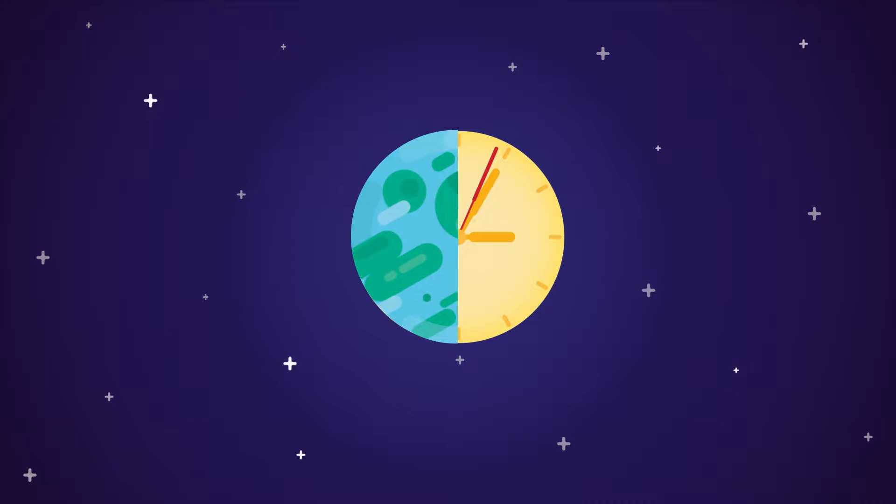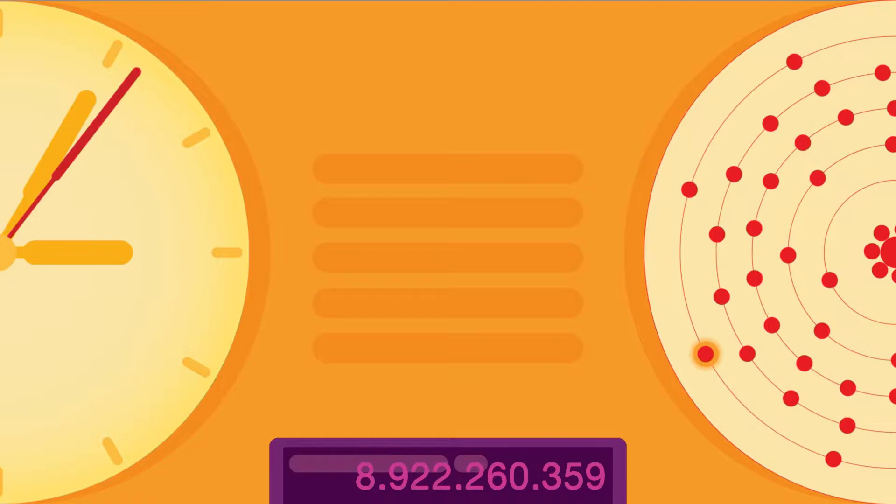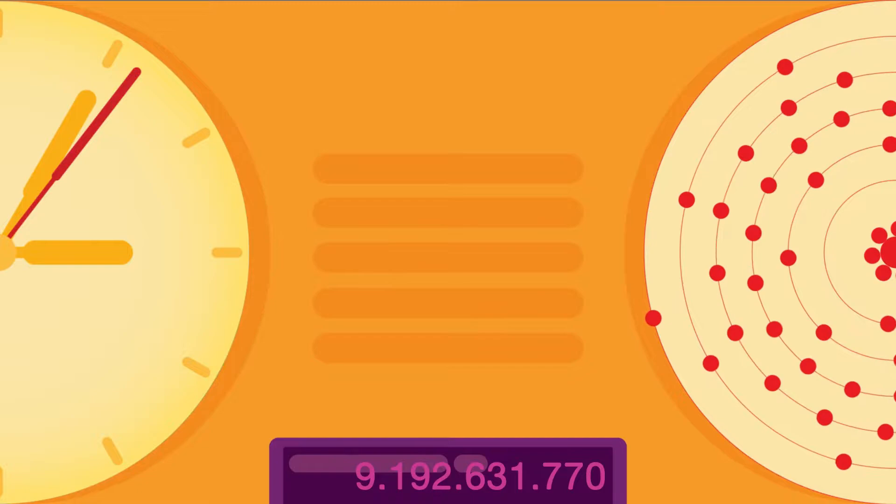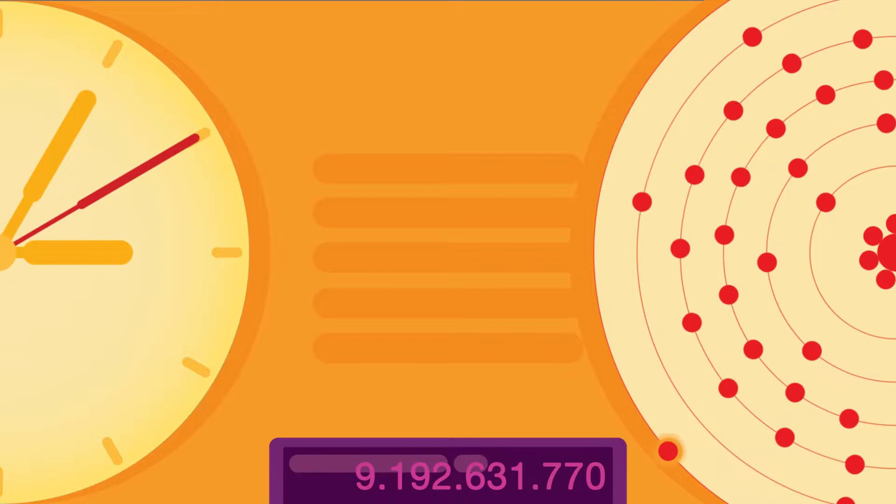One second is the time that elapses during 9,192,631,770 cycles of the radiation produced by the transition between two levels of the cesium-133 atom.